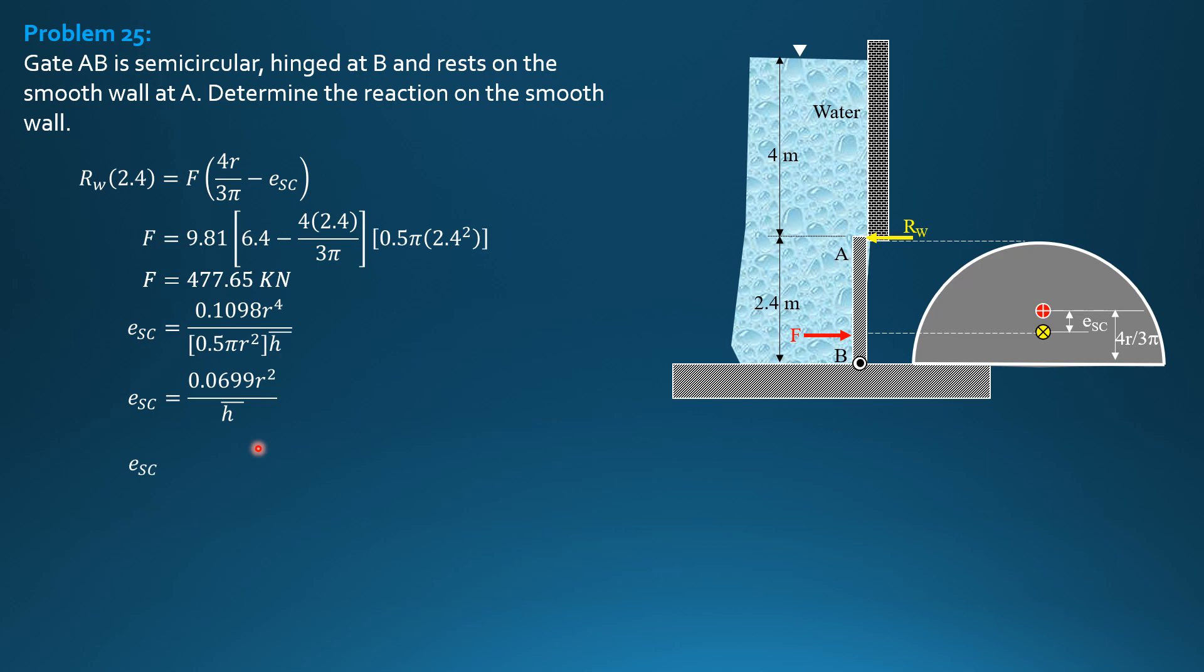Substitute 0.0699 times 2.4 square over barred H, which is quantity 6.4 minus 4 times 2.4 over 3 pi. This is barred H. So, E sub SC is 0.07482 meter.